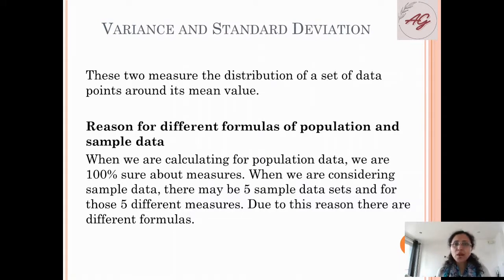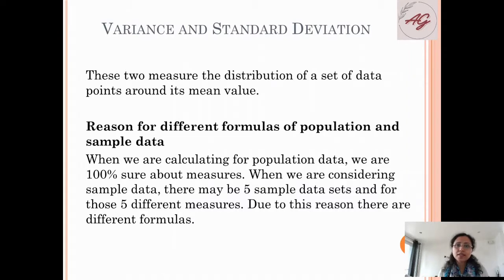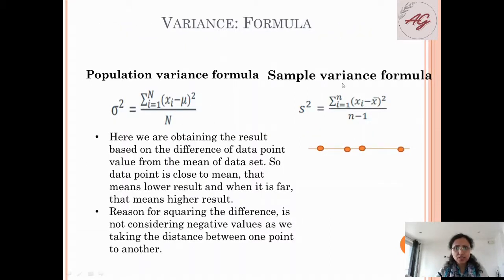Why is it so? When we are calculating for population data, we are 100% sure about the measures because we have the complete data set. When we are considering sample data, there may be five sample data sets we are considering, and for those five data sets there could be five different measures. Due to this reason, there are different formulas — and here we are 100% sure because we have the population data.